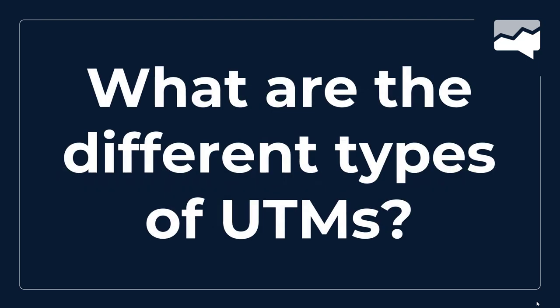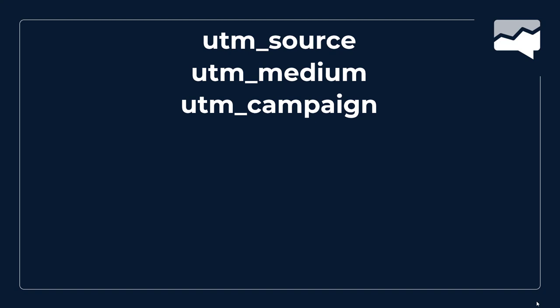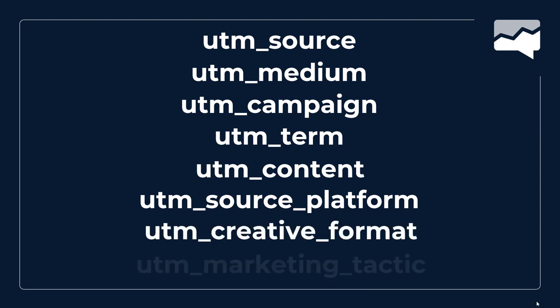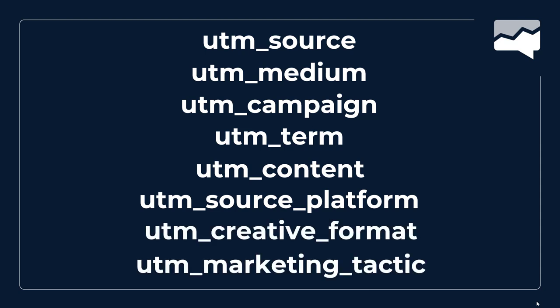You've already seen three UTMs, but what are the rest? There's UTM Source, UTM Medium, and UTM Campaign — but there's also Term, Content, Source Platform, Creative Format, and Marketing Tactic. The first five have been around for years. The last three are very new and came out with GA4, but also very useful for Google Ads and other platforms.